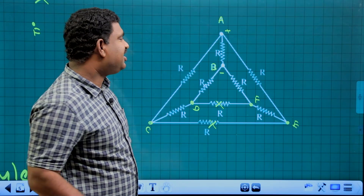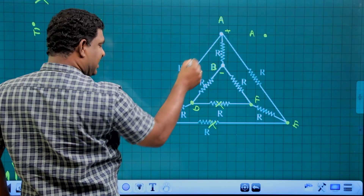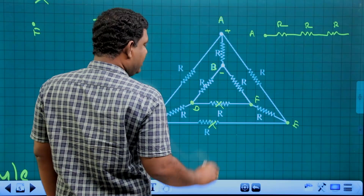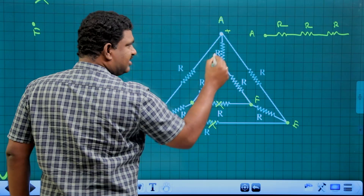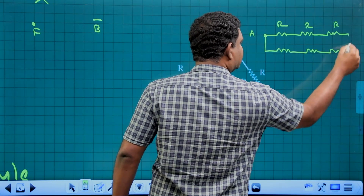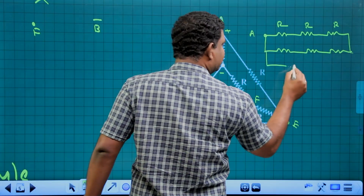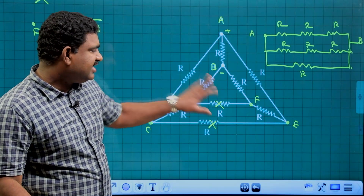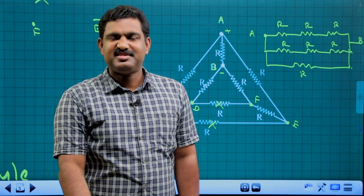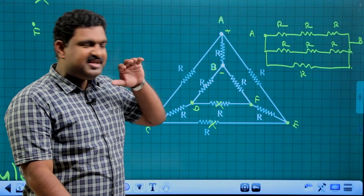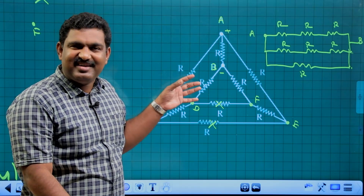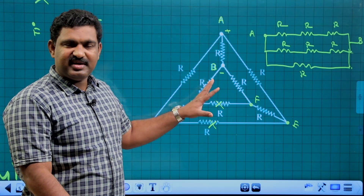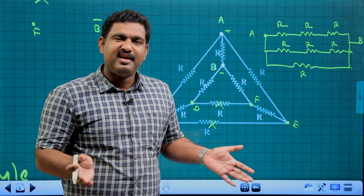So the effective resistance between A and B is 3R by 2. This follows from the path symmetry rule. Once you recognize the situation — identical paths, same-potential similar points, avoidable resistors — you can apply this method efficiently. With practice, the path symmetry rule makes these problems straightforward. Thank you.